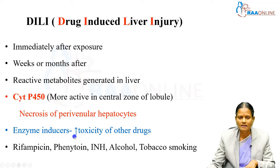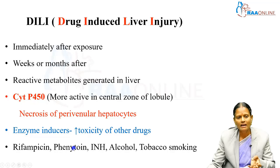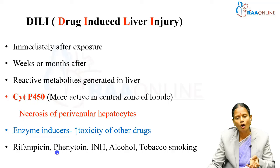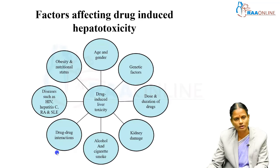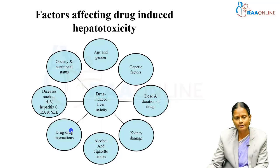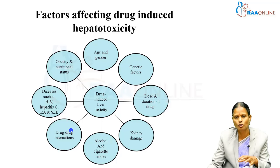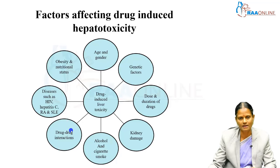Enzyme inducers add on to the increased toxicity of other drugs — examples include rifampicin, phenytoin, isoniazid, alcohol, and tobacco smoking. There are certain factors which affect drug-induced hepatotoxicity. The drug may itself produce toxicity to the liver, and certain factors may add on to the increased toxicity of the drug or chemical.